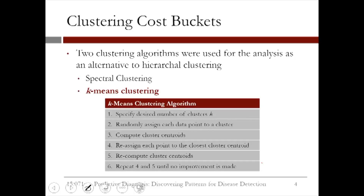We first specify the number of clusters k. Then we randomly assign each data point to a cluster. We then compute the cluster centroids. We reassign each point to the closest cluster centroid. We then recompute the cluster centroids, and we repeat steps 4 and 5 until no improvement is made.